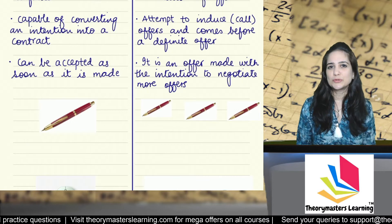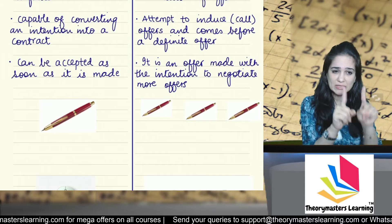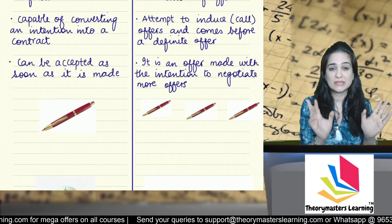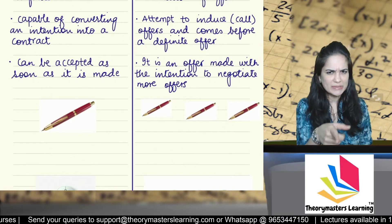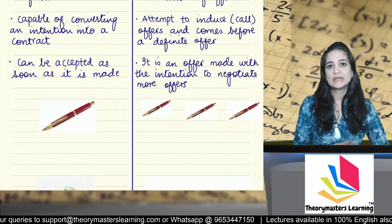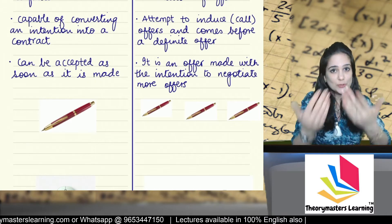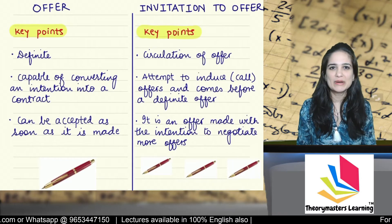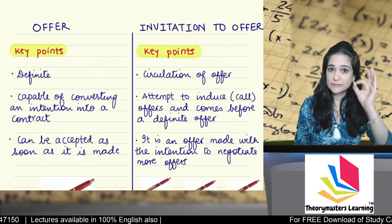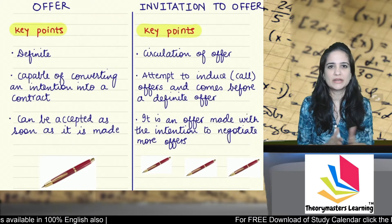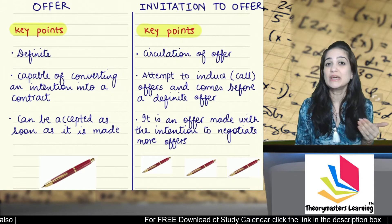But what if I say: I want to buy three pens of the same kind — three red color pens. Tell me at what price you will supply them, because I'm buying three so you will give me some discount, right? Tell me at what price you will sell to me. Over here, I am asking you to make an offer — this is nothing but invitation to offer. So offer is very definite and clear; it can be accepted or rejected immediately. Whereas invitation to offer invites an offer from the other person.